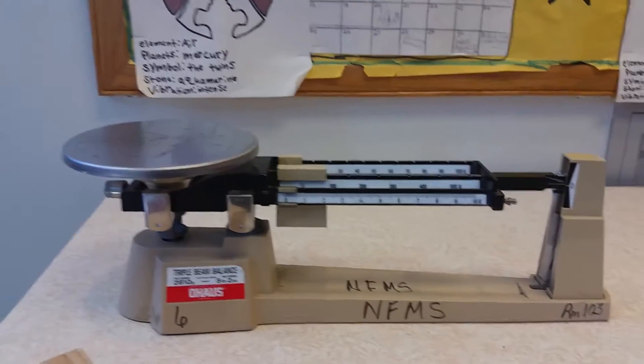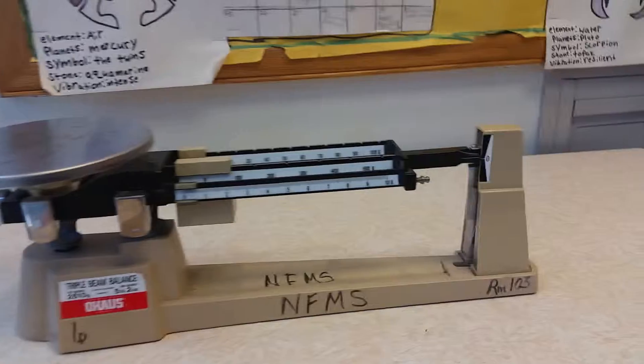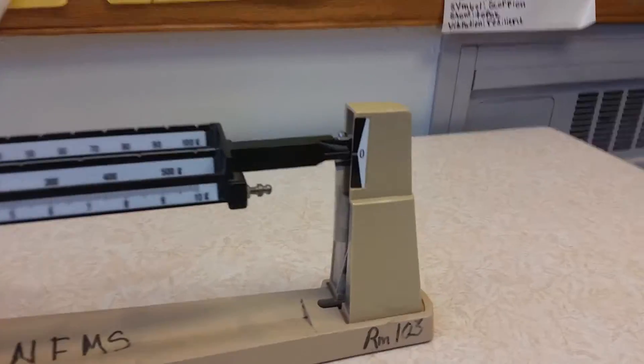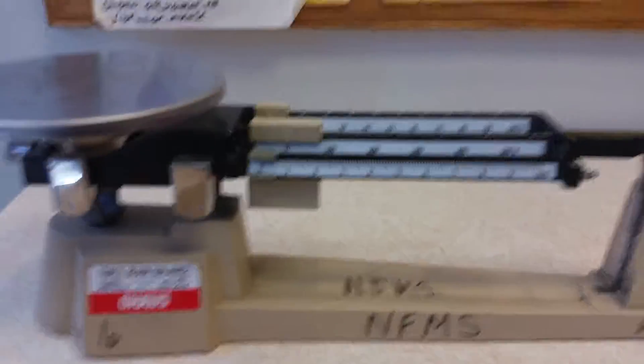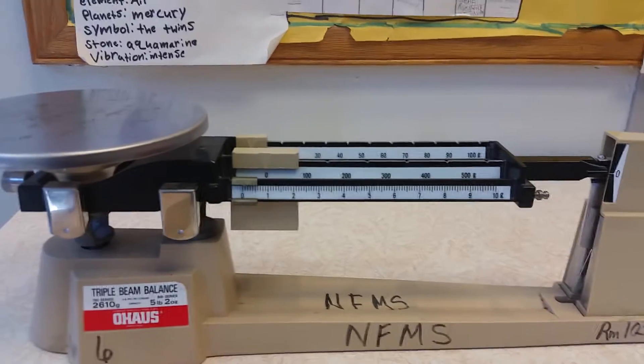First, you have to make sure the plate has nothing on it and the balance is zeroed. Make sure none of the riders have been moved before you start measuring.